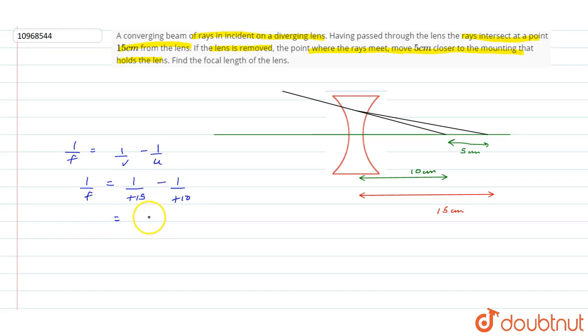Now we will solve this. That is equal to 2 minus 3 divided by 30. 1 by f is equal to, so f is equal to minus 30 cm.